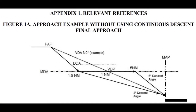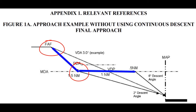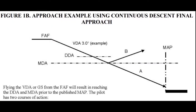In the figure, you can see that with the dive-and-drive technique the pilot must make one pitch and power change at the FAF in order to descend to the MDA. Once at the MDA, the pilot must make another pitch and power change in order to level off. Once leveled off, the pilot drives in until at the visual descent point, at which point they make another pitch and power change to descend to the runway. Once at the runway, the pilot makes another pitch and power change to finally come down and land.